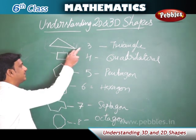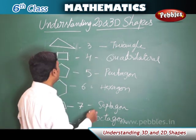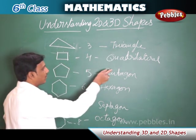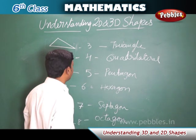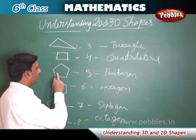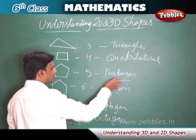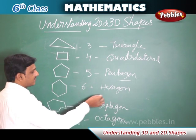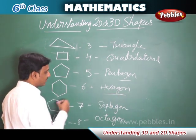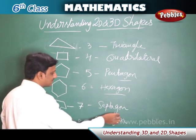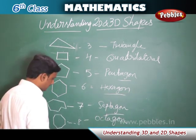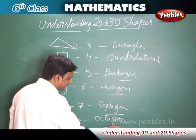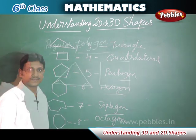To summarize: the polygon with three sides is a triangle, four sides is a quadrilateral, five sides is a pentagon, six sides is a hexagon, seven sides is a heptagon, and eight sides is an octagon. Polygons are named based on their number of sides.